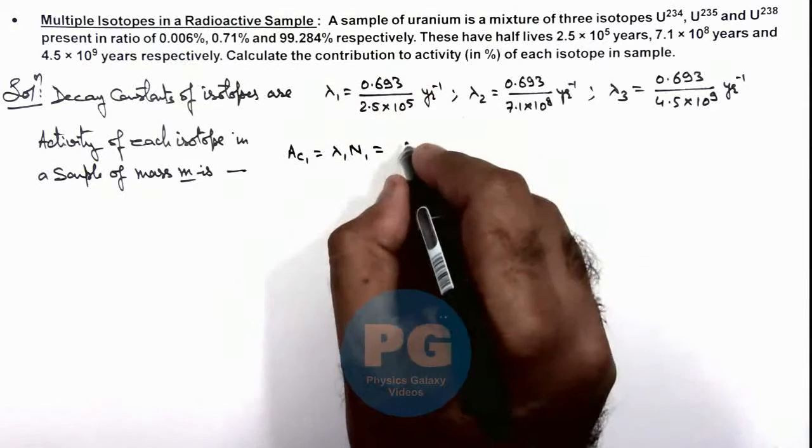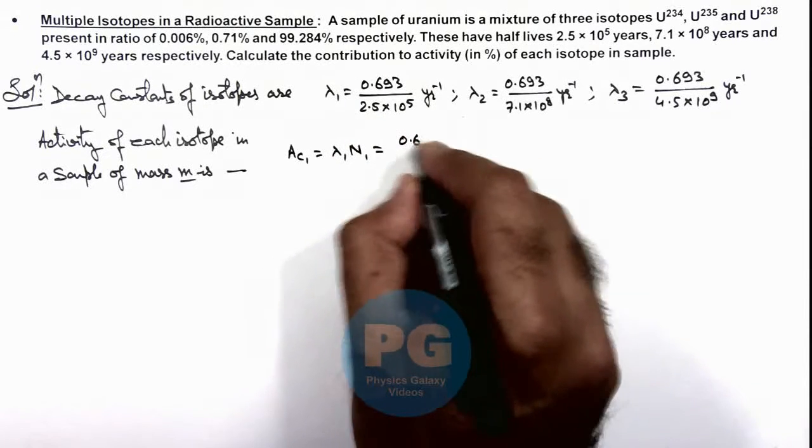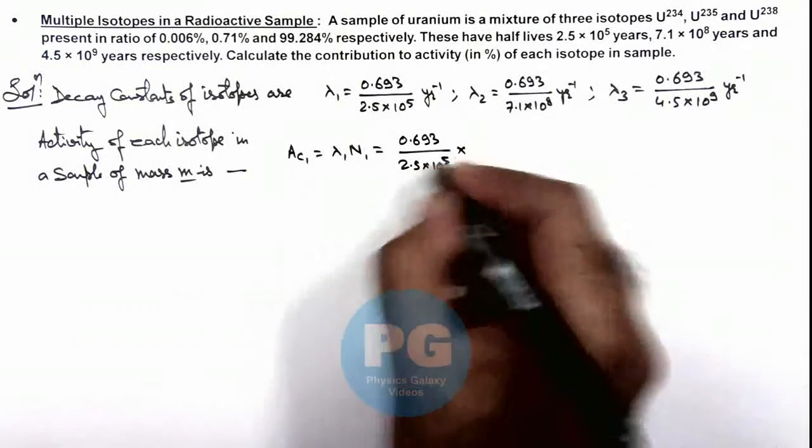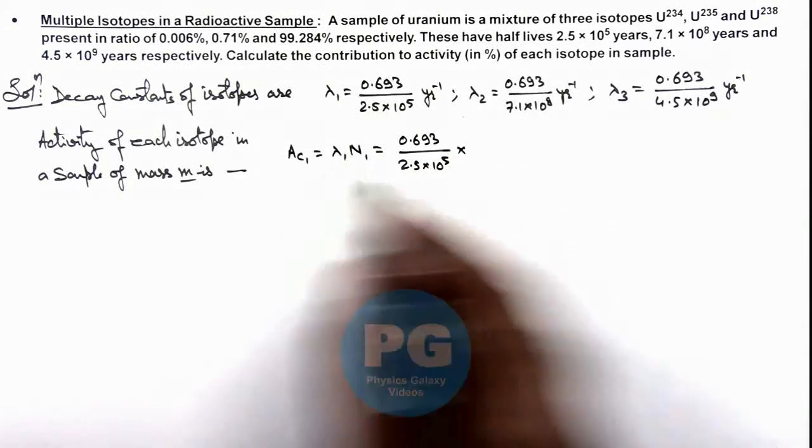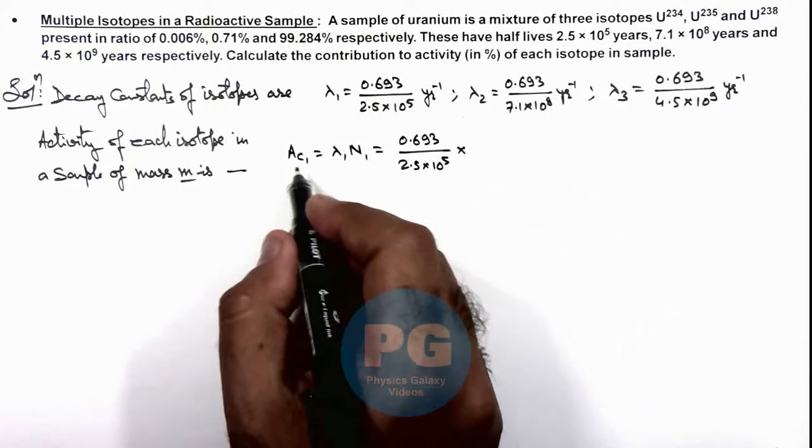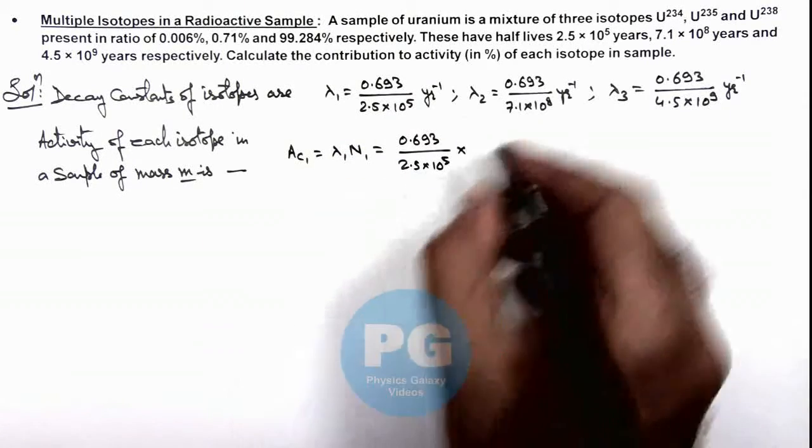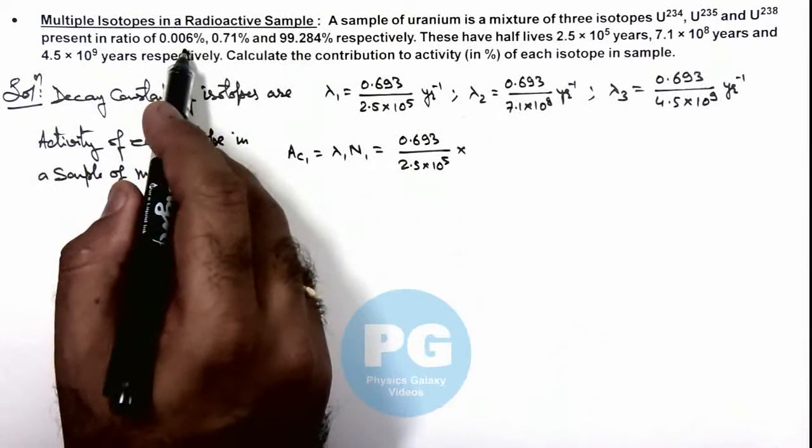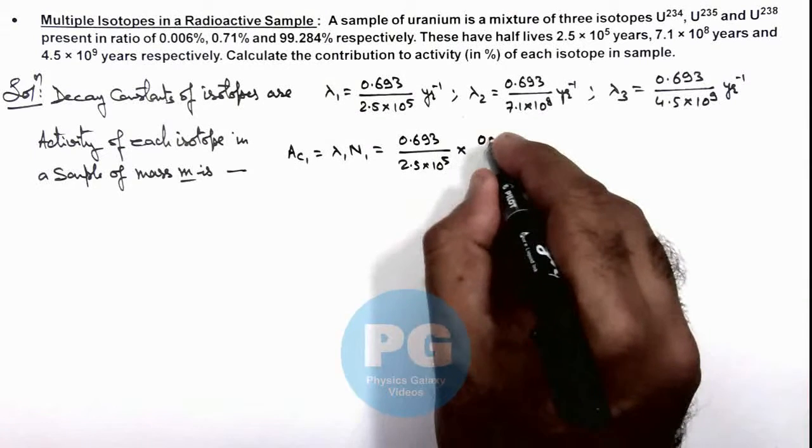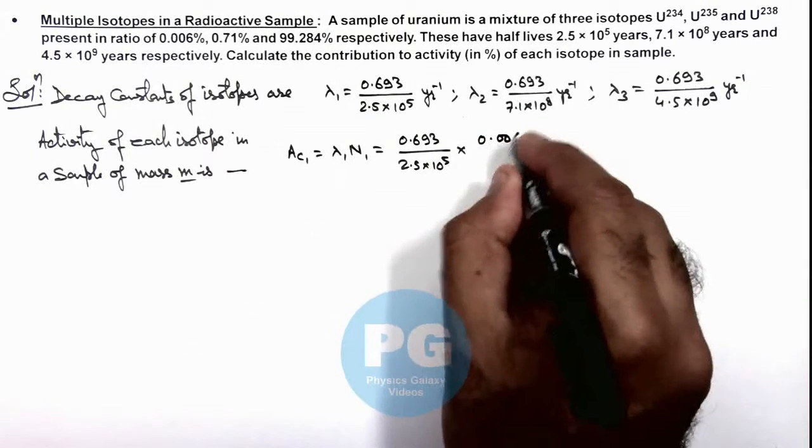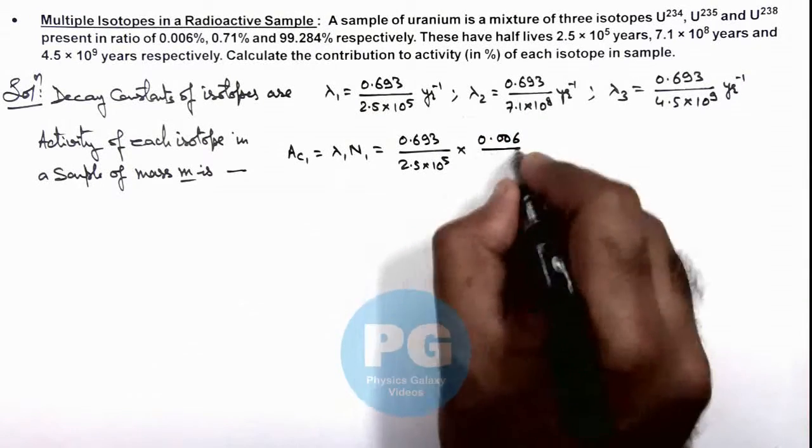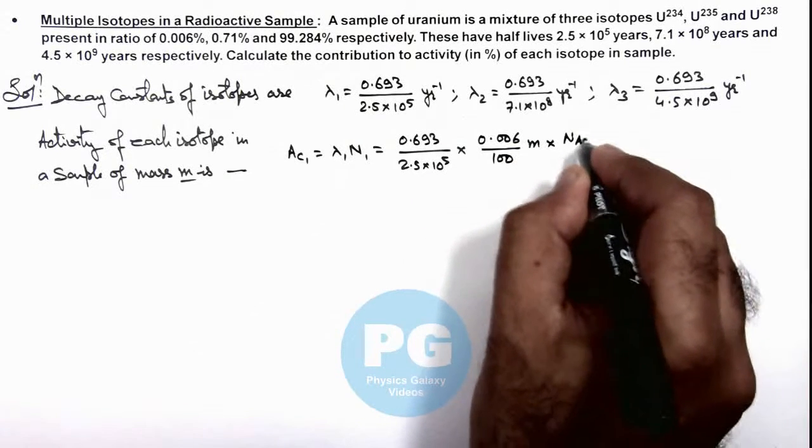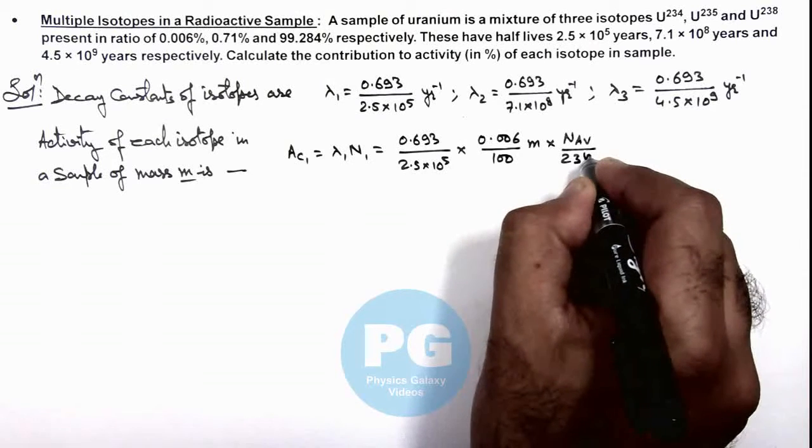Lambda 1 we can write as 0.693 by 2.5 × 10^5, multiplied by number of atoms. We can calculate by using the mole formula, which can be given as: for first isotope the percentage of mass is 0.006 by hundred times mass multiplied by Avogadro number divided by mass number, that is 234.